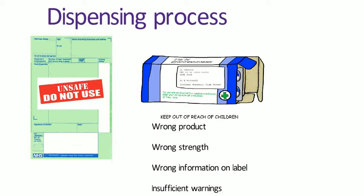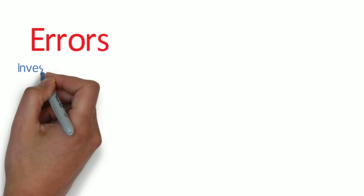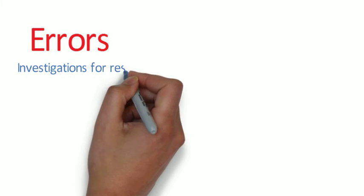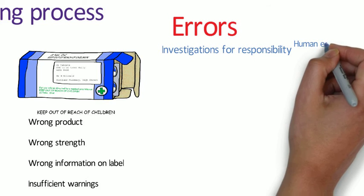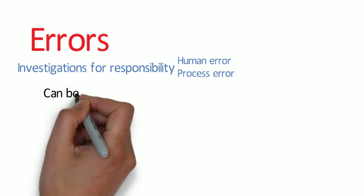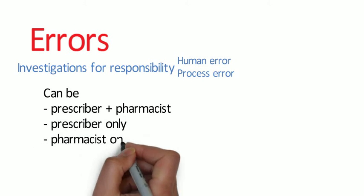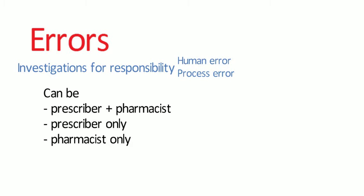There are various other dispensing errors that have received media attention. In all of these cases there will be investigations to find out who was responsible, and an exploration of whether the standard operating procedures were met — to determine if it was a human error or an actual error with the process stipulated in the paperwork. Generally, a pharmacist and a prescriber can be held negligent if there is a problem with the written prescription, but in the dispensing process itself, if the written prescription is fine, it will be the pharmacy staff who are held responsible.